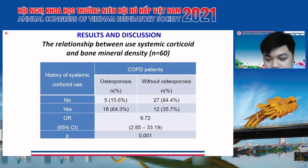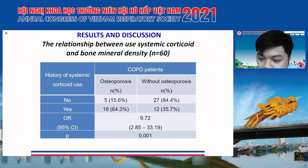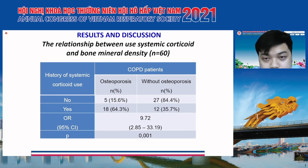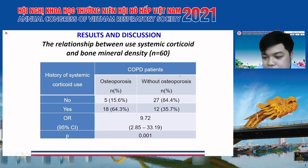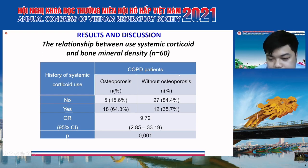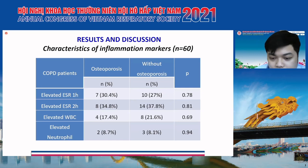When considering the effect of corticosteroids on bone density, we find that the OR is 9.7, with a 95% confidence interval from 2.9 to 33.2, not containing 1, and the P-value is less than 0.05. This means patients with a history of systemic corticosteroid use have a 9.7 times higher risk of osteoporosis than the other group.